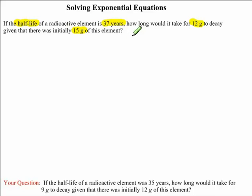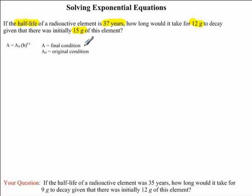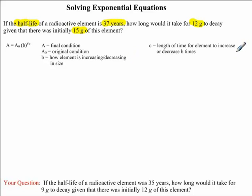The equation we're going to use to solve this problem is: a = a₀ · b^(t/c). A represents the final condition. A₀ represents the original condition. B is how the element is increasing or decreasing in size. C represents the length of time for the element to increase or decrease b times. And t represents the time elapsed.